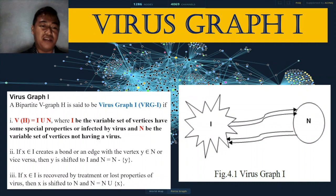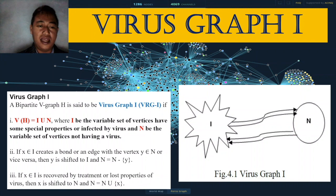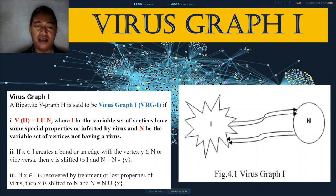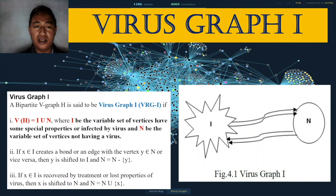A bipartite V-graph H is said to be a virus graph one if V(H) = I ∪ N, where I is the variable set of vertices having special properties — that is, infected by the virus — and N is the variable set of vertices not having the virus, i.e., the not-affected ones.